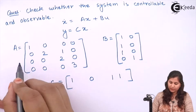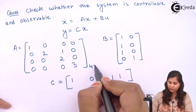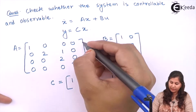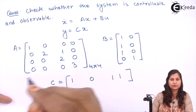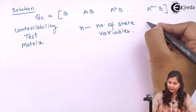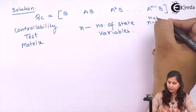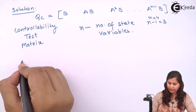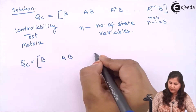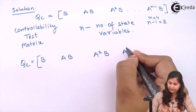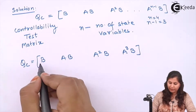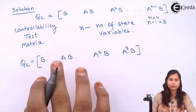We determine this because the A matrix is of order 4×4. So when we place it here we will have x1, x2, x3 and x4 — 4 state variables. The controllability matrix QC is given by [B, AB, A²B, ..., A^(n-1)B], and since n is 4, we calculate up to A³B. The B matrix is given to us in the question; we have to calculate AB.